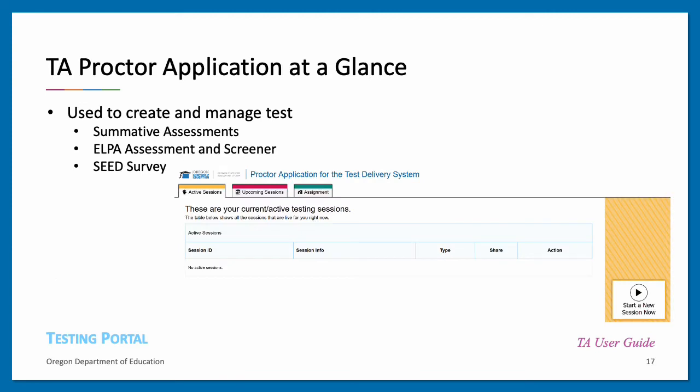The TA interface is accessed through the test administration option in the OSAS portal. The screenshot shown is the proctor application landing page TAs will see when first logging in to the test delivery system. TAs will create a test session by selecting the Start a New Session Now button in the lower right-hand corner of the landing page. The green Assignment tab at the top of the page is an available remote option for administering the SEED Survey. For more information specific to administering the SEED Survey using the Assignment option, please refer to the SEED Survey Training Module 9.